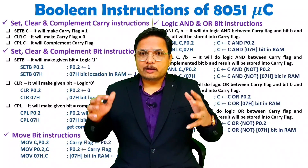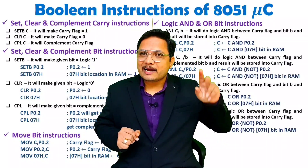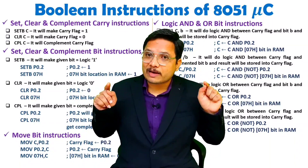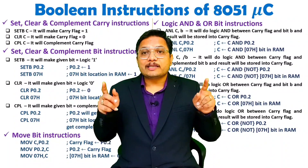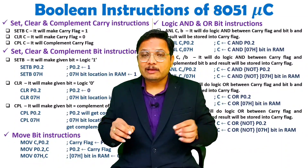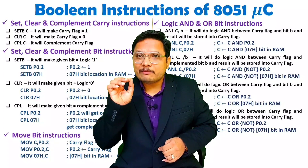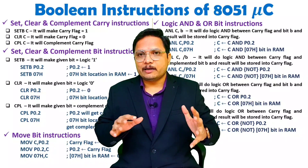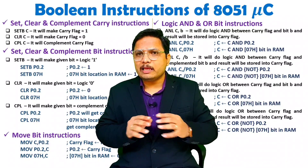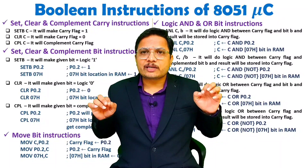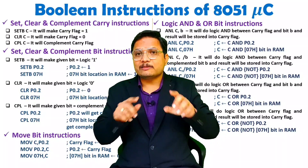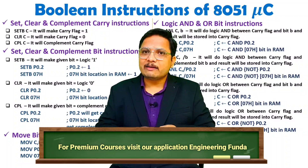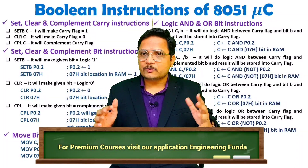In short, with boolean instructions you can perform one-bit operations: set, clear, and complement. All the instructions work with respect to carry. Logic AND and logic OR are possible, and using the backslash notation with a bit ensures the logic operation happens with the NOT of that bit. You can use these instructions to perform any boolean function or implement any boolean circuit, which I will demonstrate through programs in future videos. Thank you so much for watching this video.